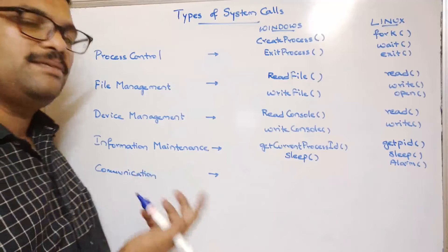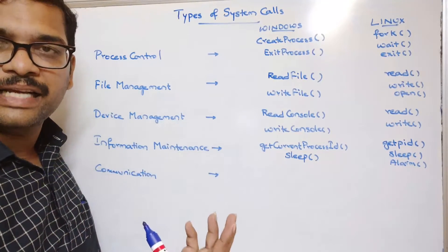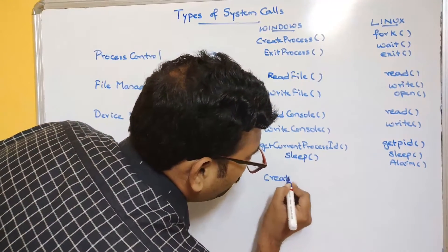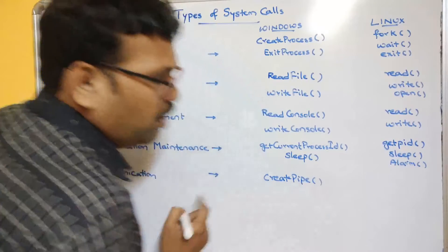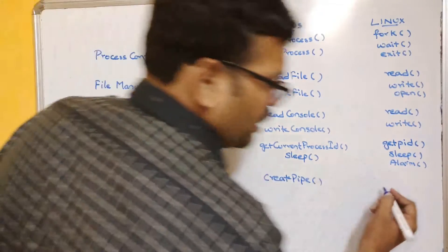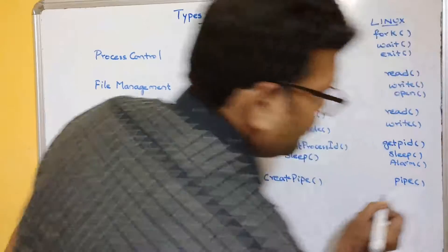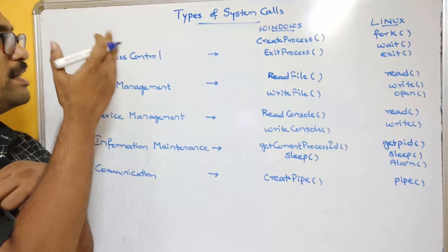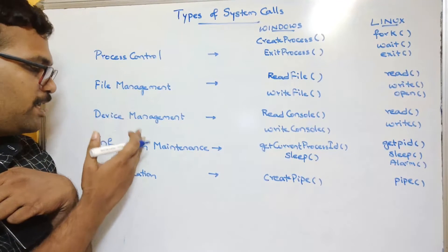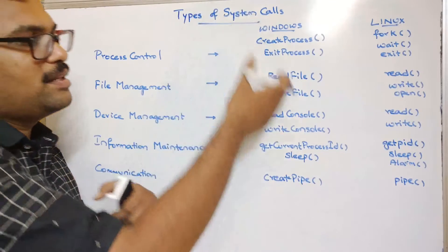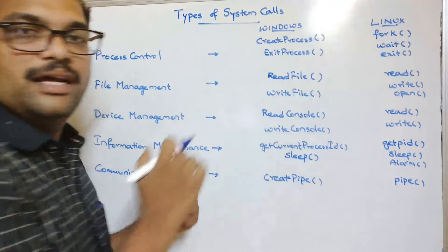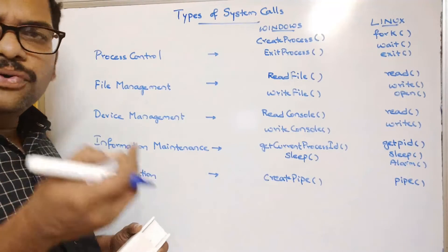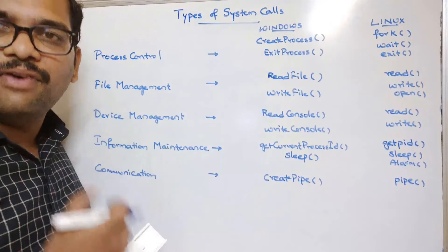Coming to communication — mainly used for establishing connections and exchanging information: in Windows, the system call is create pipe. In Linux, we simply call it pipe. These are a few system calls covering all five categories: process control, file management, device management, information maintenance, and communication, represented in both Windows and Linux.